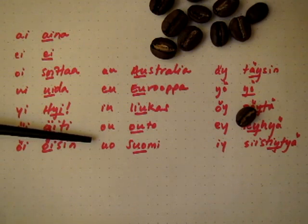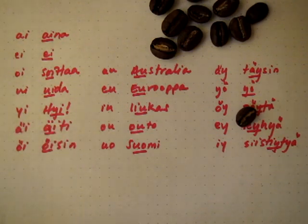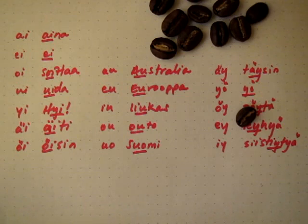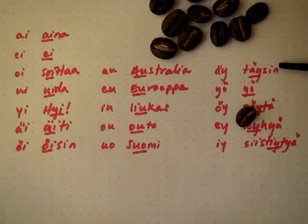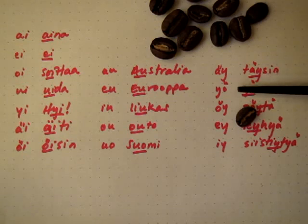Uo, uo, suomi, suomi. Äy, äy, täysin, täysin.